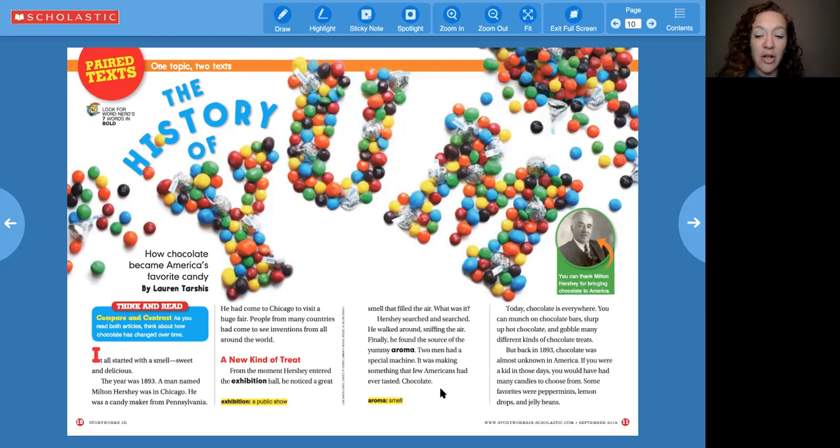Today, chocolate is everywhere. You can munch on chocolate bars, slurp up hot chocolate, and gobble many different kinds of chocolate treats. But back in 1893, chocolate was almost unknown in America. If you were a kid in those days, you would have had many candies to choose from. Some favorites were peppermints, lemon drops, and jelly beans. Let's look at that photograph and caption. You can thank Milton Hershey for bringing chocolate to America. When I read nonfiction, nonfiction is one of my favorite things to read because you learn so many true facts. Fiction is a story. And remember, we talked about how we don't think of fiction as fake anymore. We think of fiction as a story.